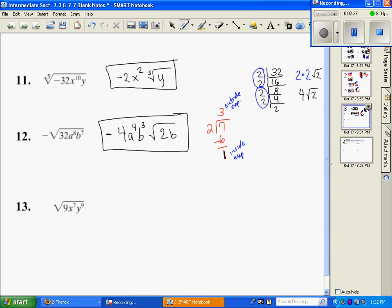Number 13, the square root of 9 is 3. For x to the 7th, I'm going to divide 7 by 2, because that's my known index. My known index is right there, it's a 2. So when I divide it, I'm going to get x to the 3rd. This is my outside exponent. This one's my inside exponent.